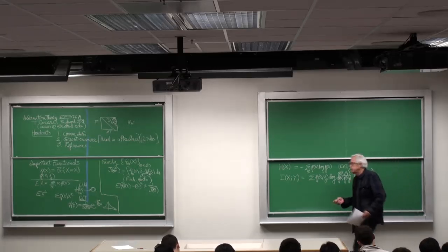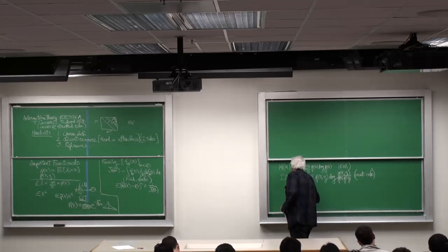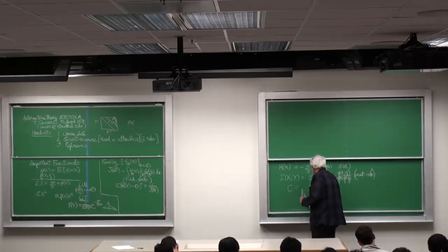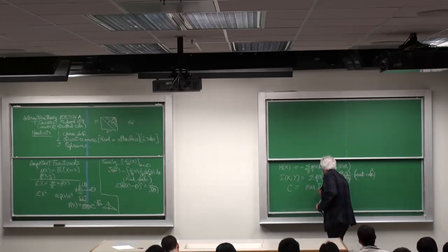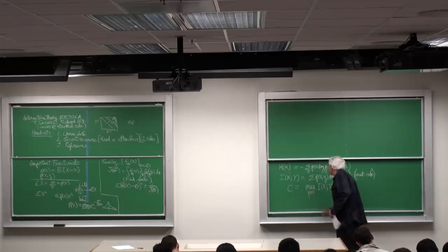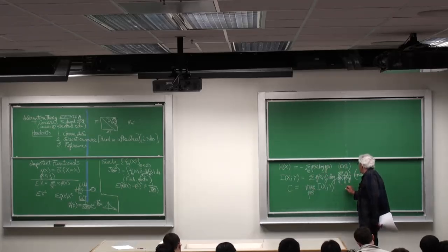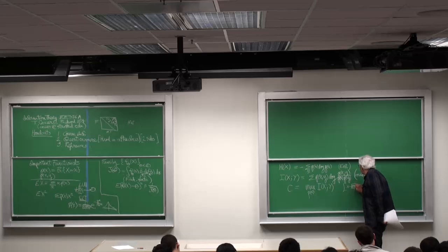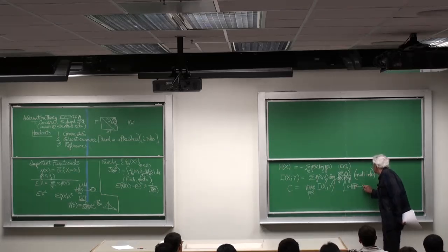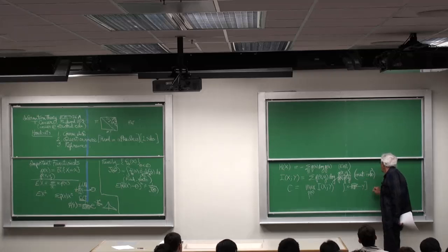This is called mutual information. Then we'll have something called channel capacity, which is the max of i of x, y over all marginals p of x. So assumed here is you have x goes in, p of y given x is the distribution of what comes out.